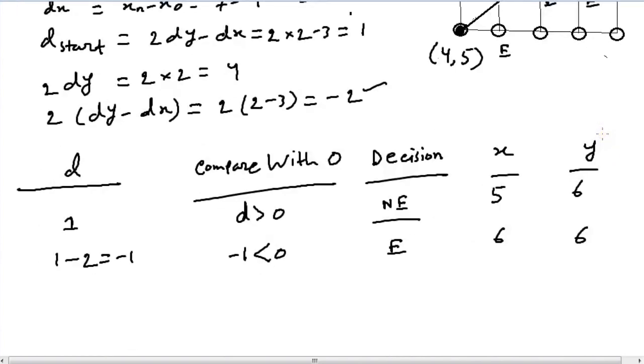So, since we chose E, we increment our d value by adding it to twice dy which is 4. This gives us 3. 3 is greater than 0, we choose NE. In choice of NE, our x value would be incremented by 1 equals 7, and the y value would be incremented by 1 equals 7.